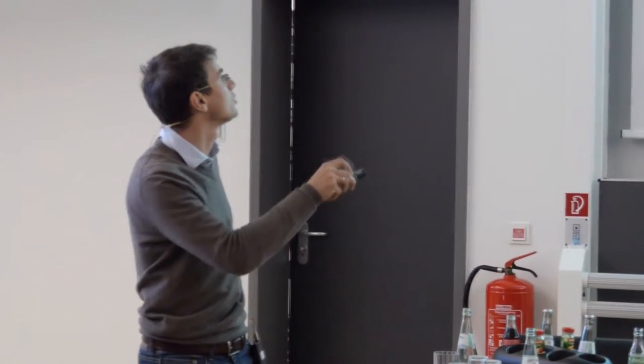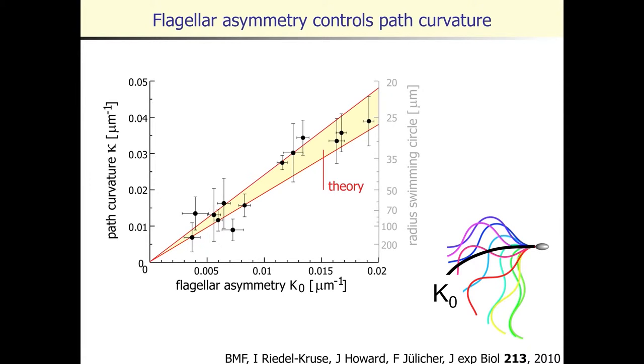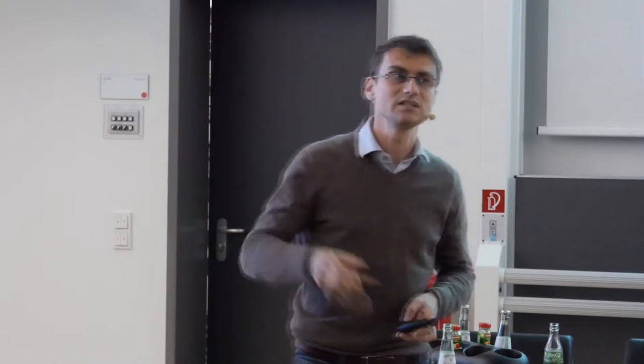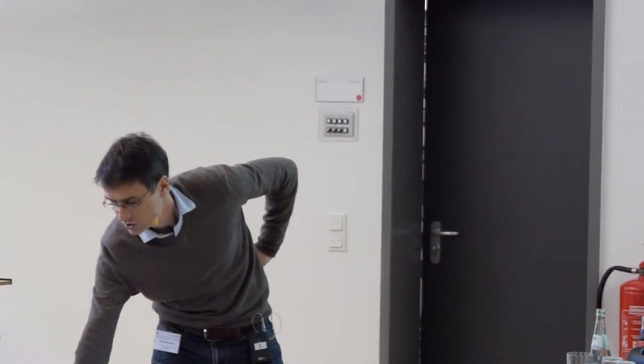We find a linear correlation between the asymmetry of the flagellar beat — the mean flagellar curvature — and the curvature of the swimming path. This linear relationship holds both in experiment and in theory. Importantly, this flagellar asymmetry is not a constant property; sperm cells can dynamically adjust this flagellar asymmetry and thereby change their path curvature and steer their way.